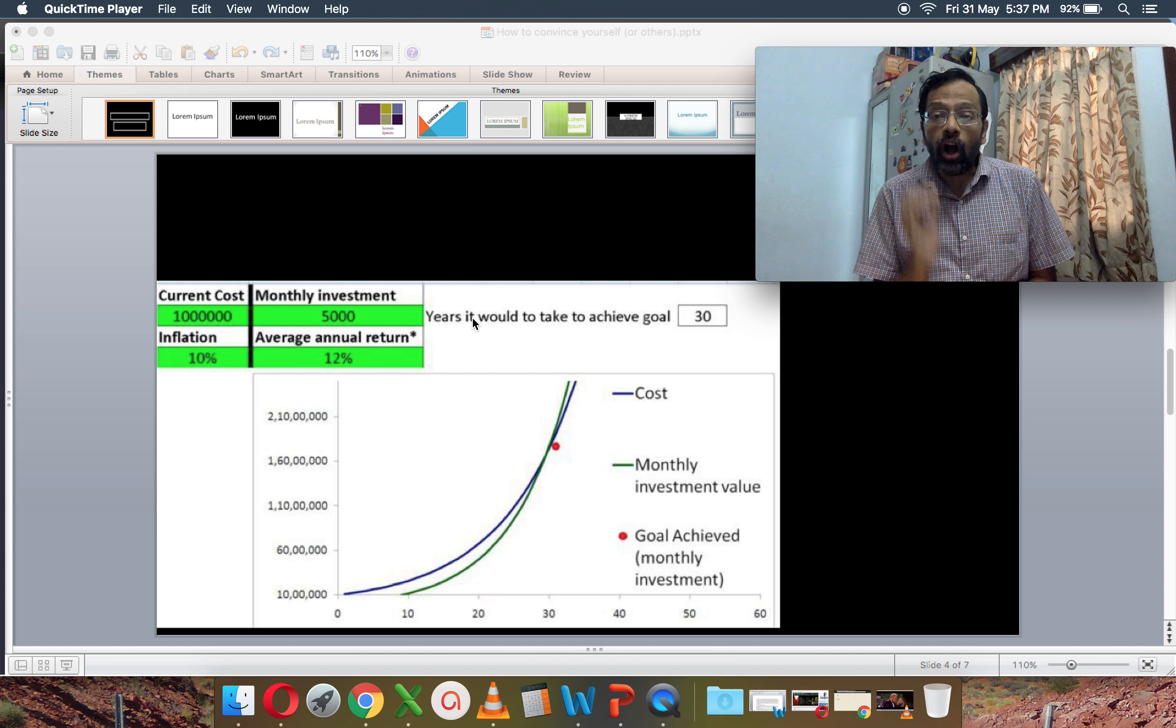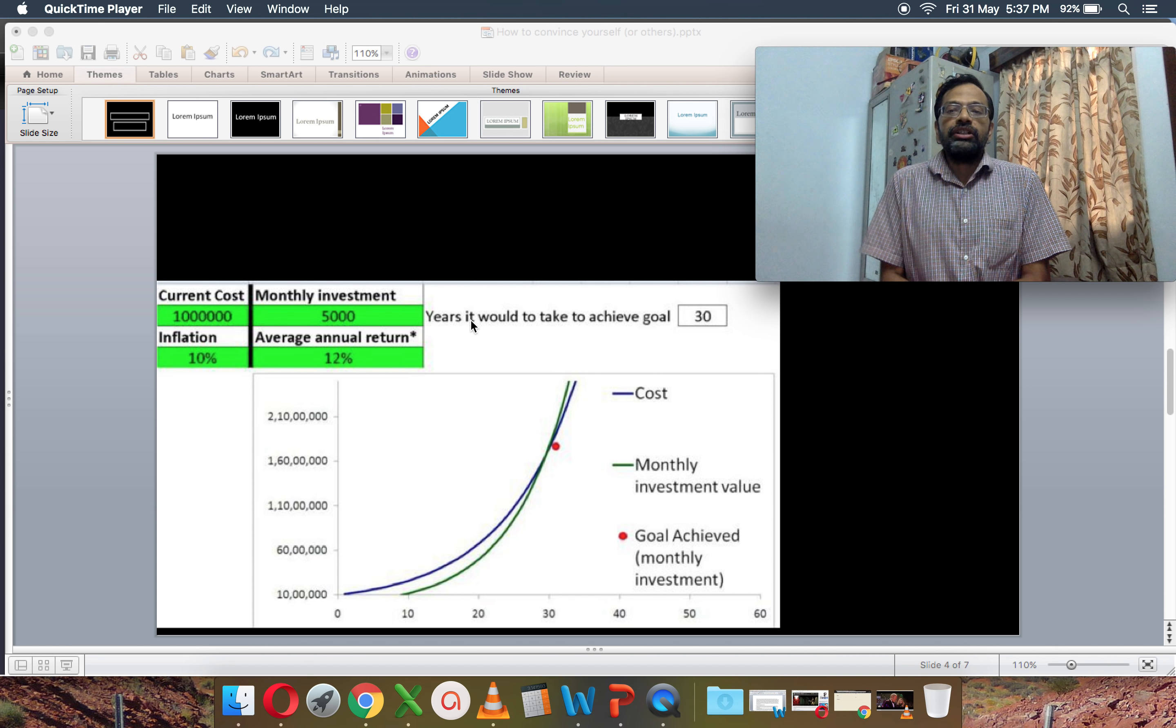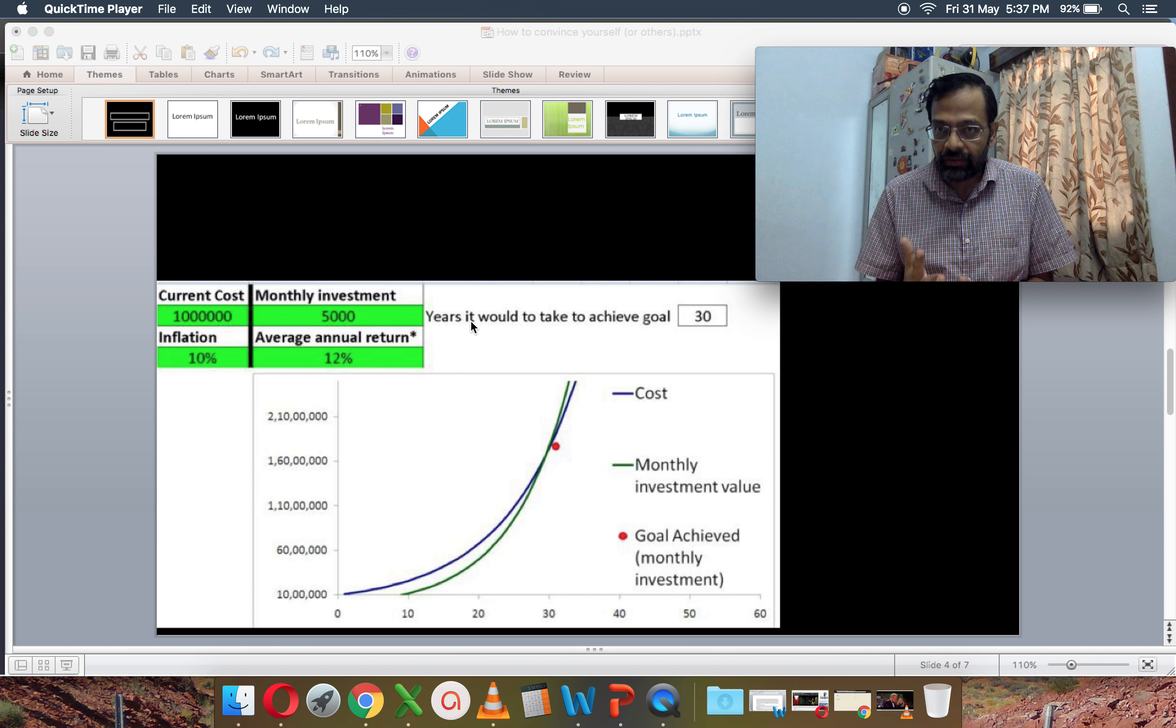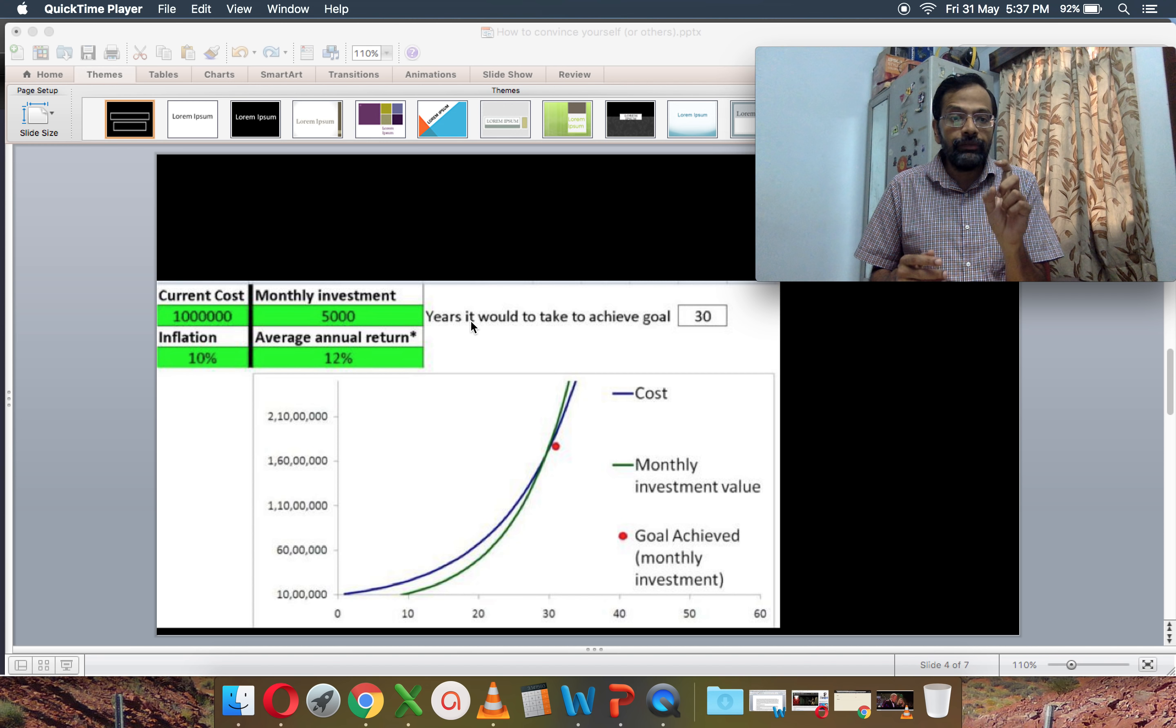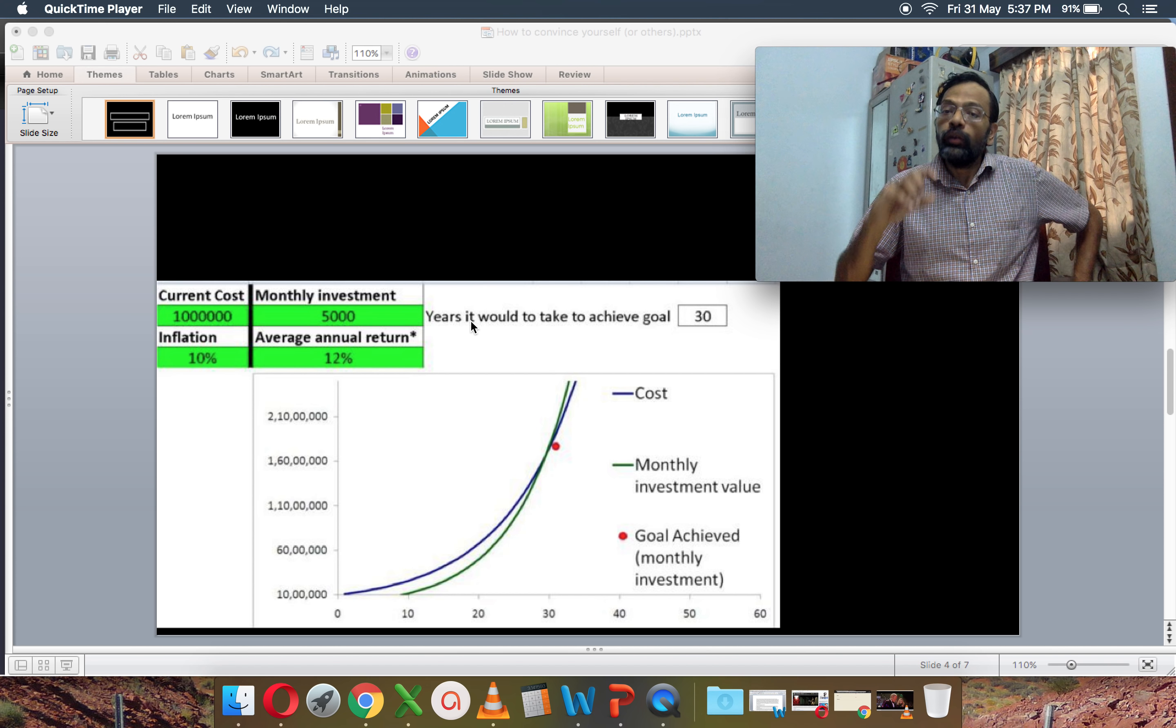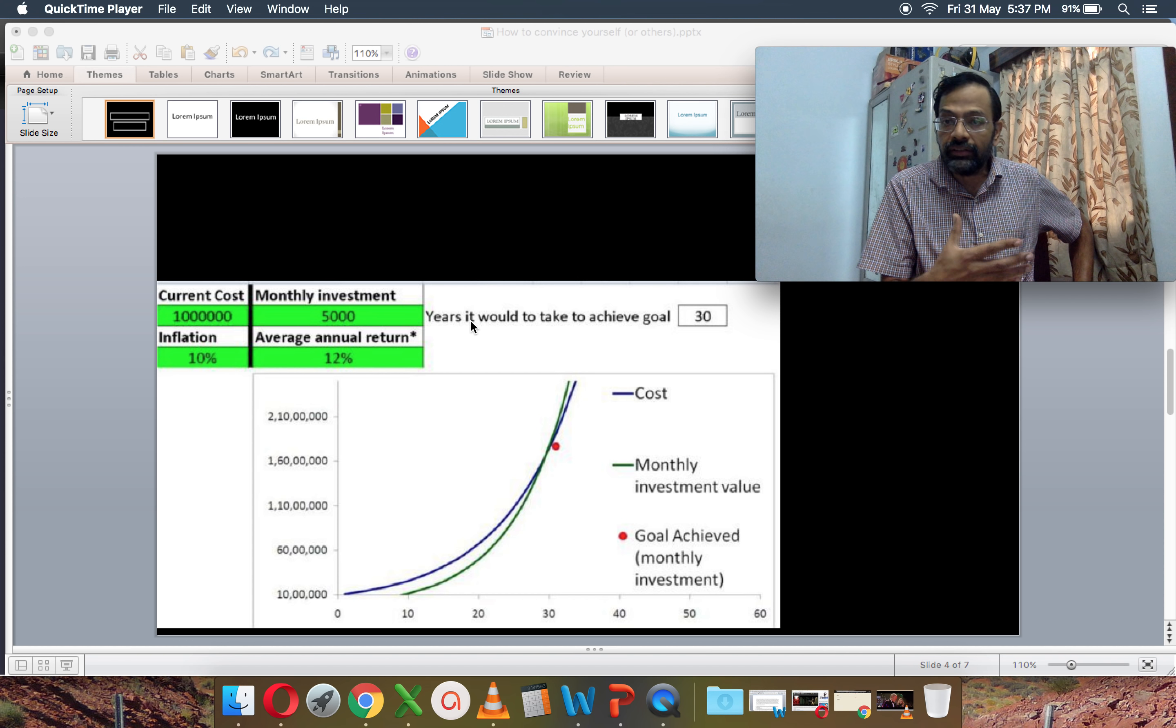Again, if the person decides to not change that monthly investment of 5,000, the goal will not be achieved in 19 years. In fact, it will take 30 years. So please recognize, if the gap between inflation and annual return decreases, then the annual investment must be increased.